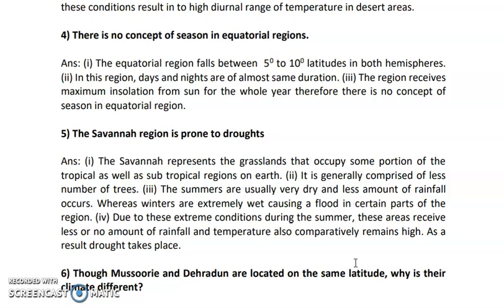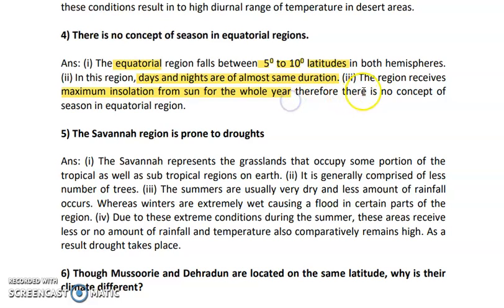There is no concept of season in the equatorial region. The equatorial region lies at the equator, covering a latitudinal extension from 5 to 10 degrees in both the northern and southern hemispheres. This region is very close to the sun, as sun rays are totally perpendicular at these places, so the days and nights are of equal length — 12 hours each. The region receives maximum insolation from the sun for the whole year; therefore, there is no concept of season in the equatorial region.